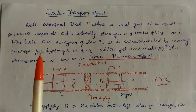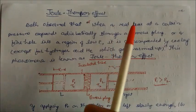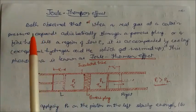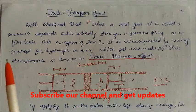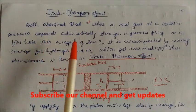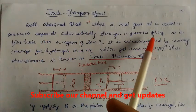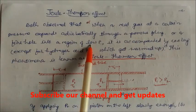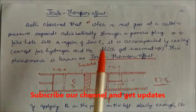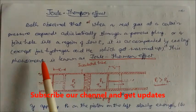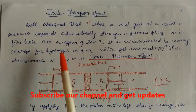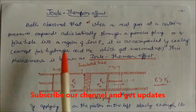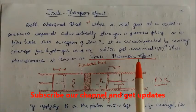Friends, in this session we will study the Joule-Thomson effect. Joule and Thomson both observed that when a real gas at a certain pressure expands adiabatically through a porous plug — a plug which is porous in nature or a fine hole — into a region of low pressure, it is accompanied by cooling, except for hydrogen and helium. These two gases warm up, but all other gases get cooled. This phenomenon is known as the Joule-Thomson effect.